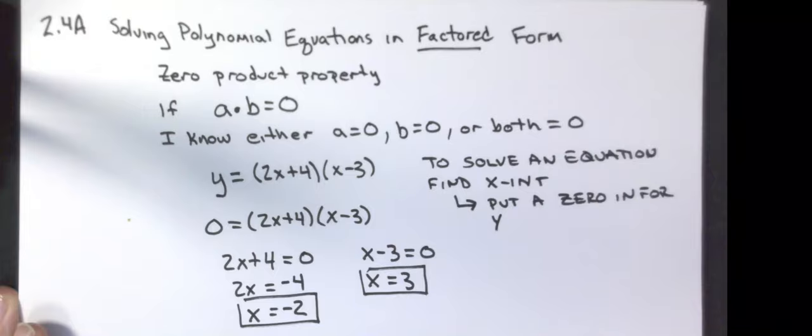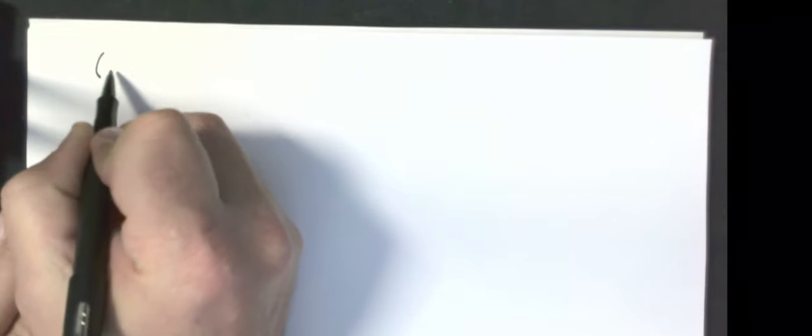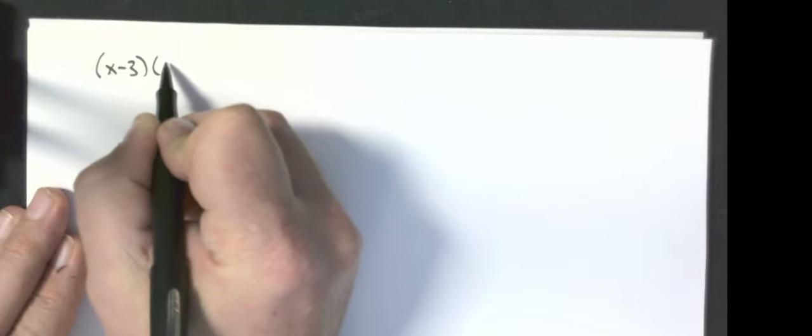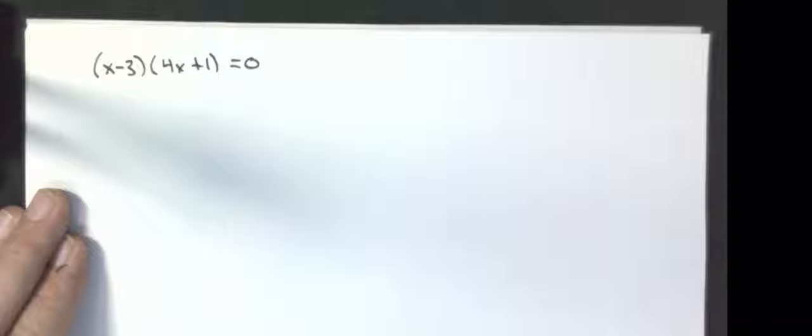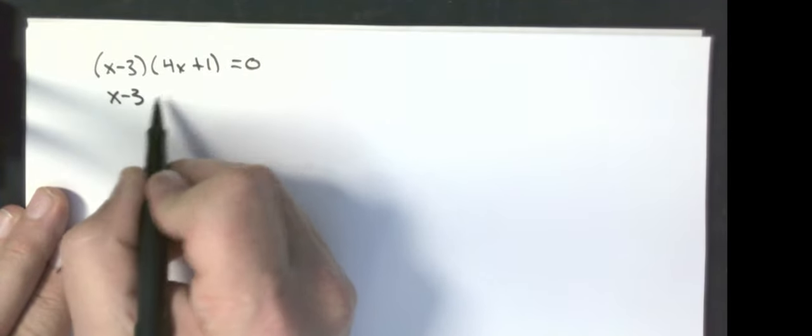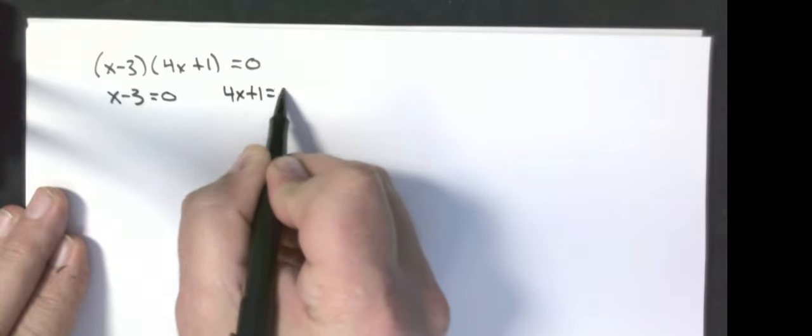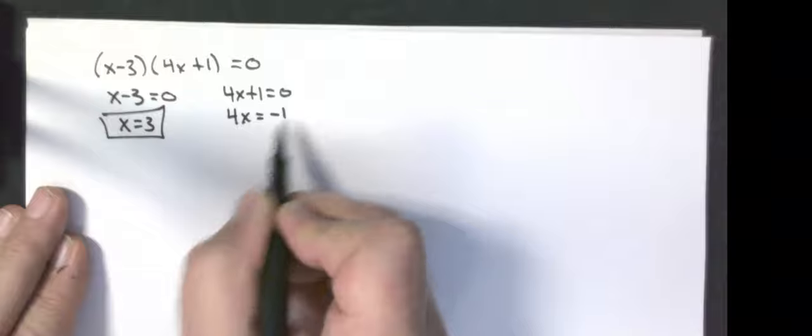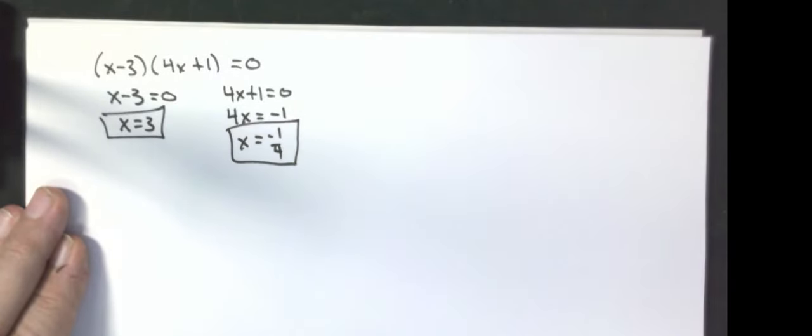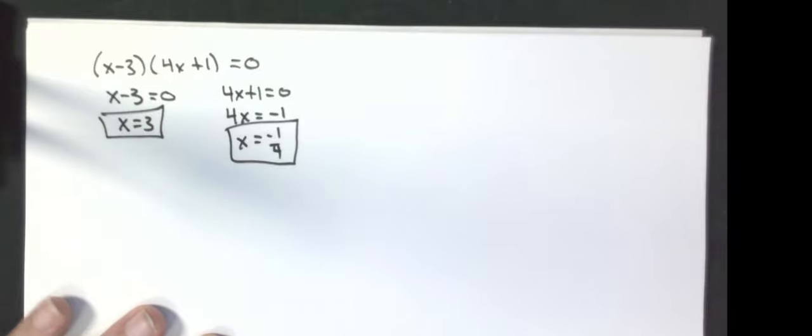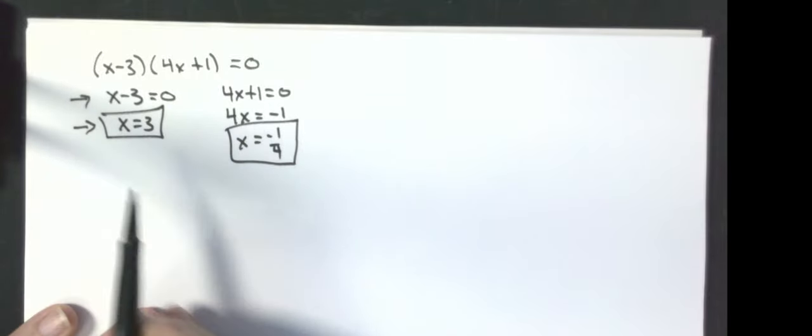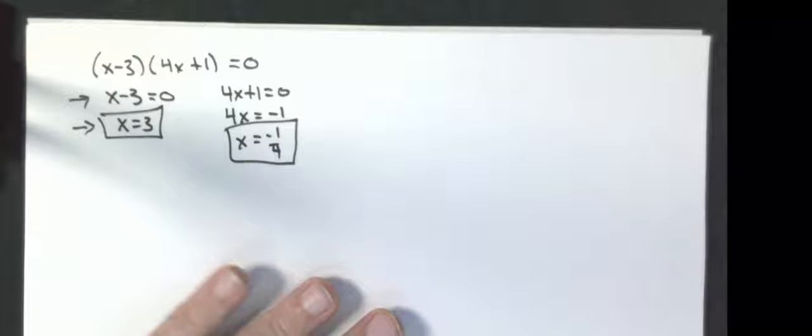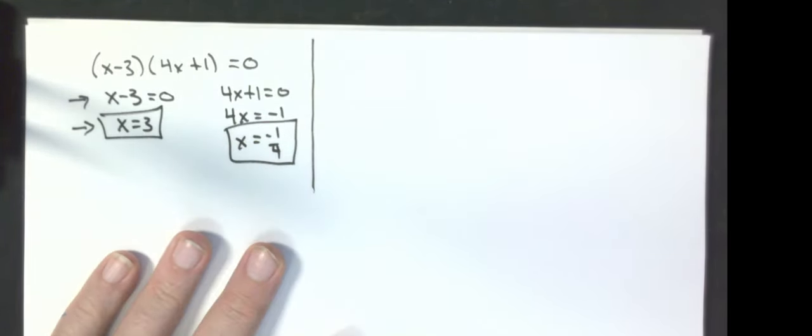I'm going to do several examples. I want to solve the following: x minus 3 times 4x plus 1 equals 0. I'm going to have two answers. Set the first factor equal to zero, set the second factor equal to zero. Add three, subtract one, divide by four. There's my two answers. I do not need to see you write this step out, I need to see you write the answers out. I do not need to see intermediate steps. You guys are sophomores. I expect you to be able to solve linear equations in your head.